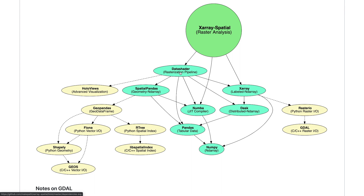DataShader is a general purpose rasterization pipeline to efficiently and accurately turn huge datasets into beautiful images. Dask helps X-Array Spatial scale horizontally to many threads, many cores, and even many machines in large clusters. Numba represents our vertical scaling by just-in-time compiling spatial algorithms for fast execution.